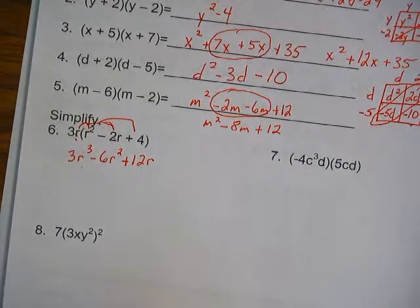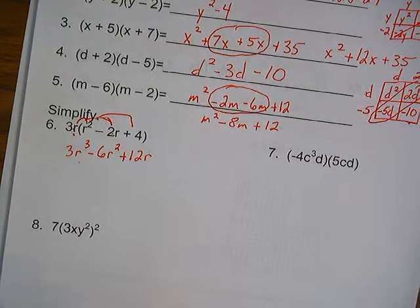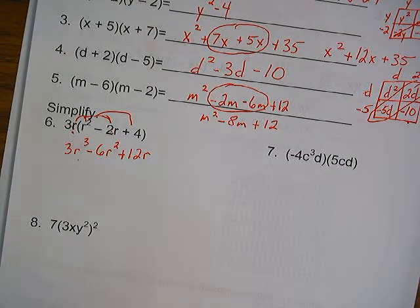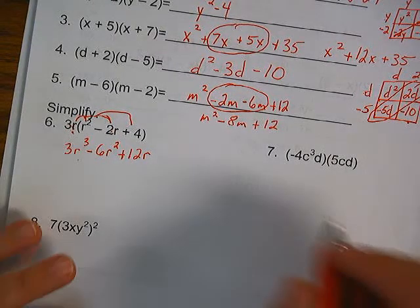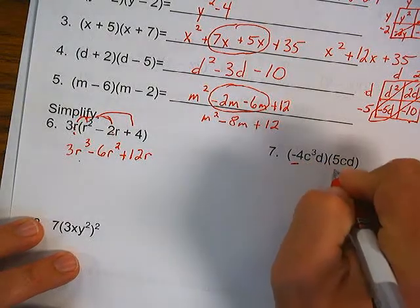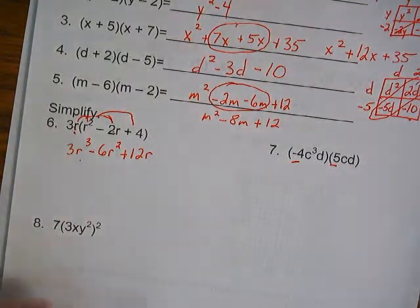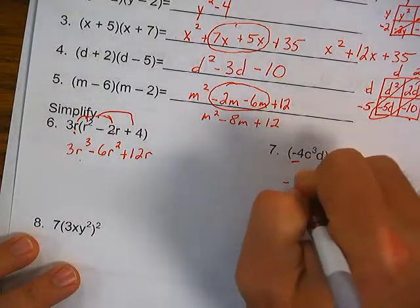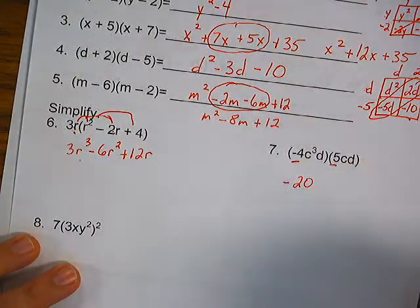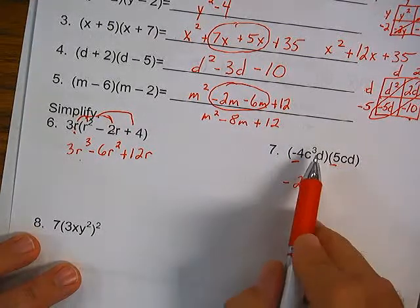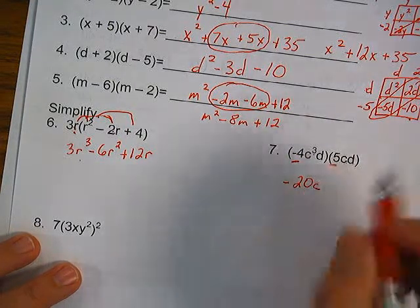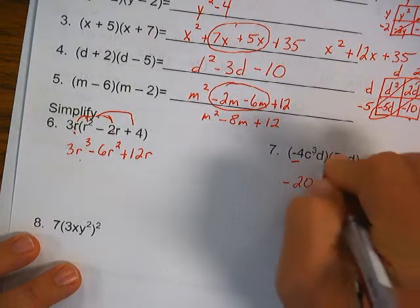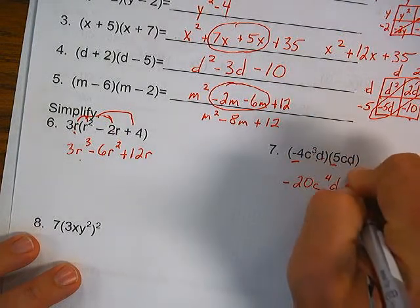Number 7 is a review of exponent rules. We're multiplying like bases together, so we add the exponents. First, take care of the coefficients: negative 4 times 5 is negative 20. The first like base is C: 3 plus 1 gives C to the 4th. Then D: D squared.